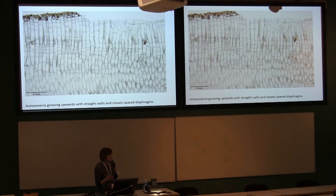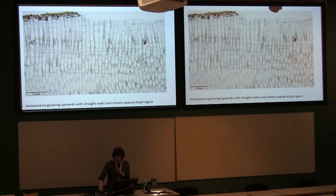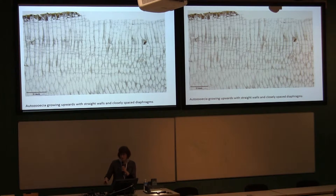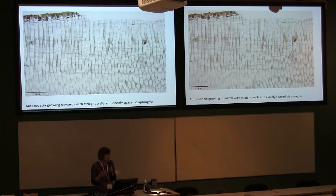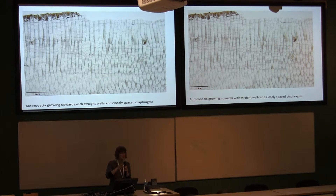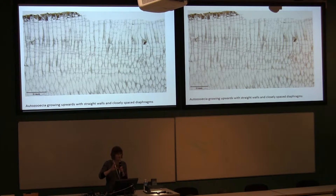We then looked at the diaphragm spacing. When we first looked, the diaphragms on the ones growing up seemed much more closely spaced than those growing down. But this was a function of sample size — once we examined more samples, the ones growing down also had multiple diaphragms. Measuring throughout the colonies, it seemed that where the diaphragms were most distal, they were most closely spaced together.